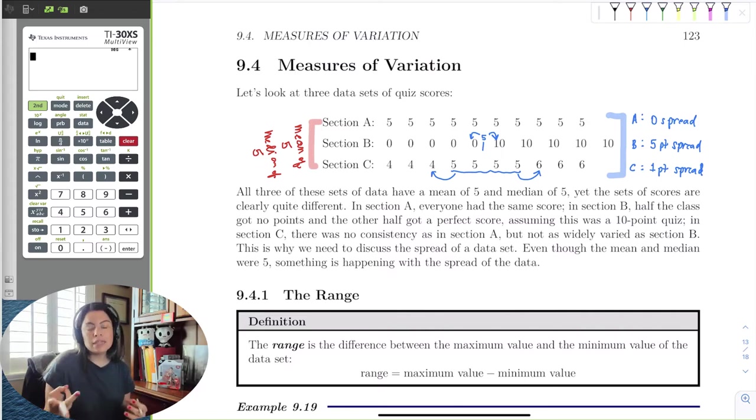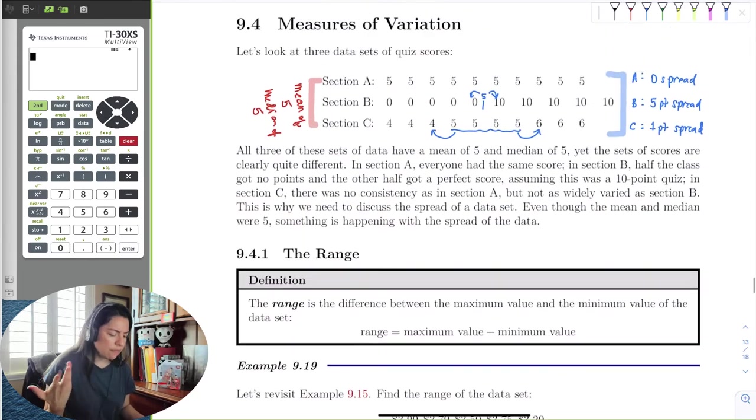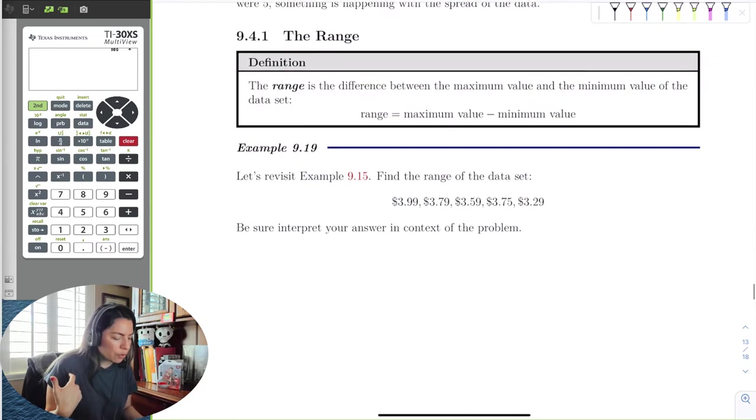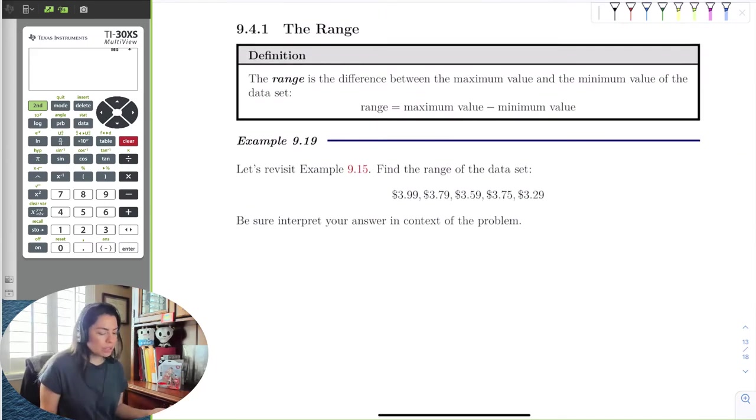We have three of these that talk about it. It's the range, the standard deviation, and the five-number summary. So for the range, the range is quite simple. That's just taking the largest value of your data set and subtracting the smallest, and it's that easy.